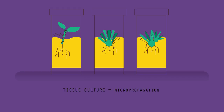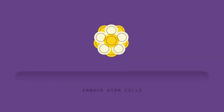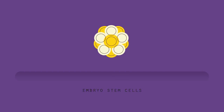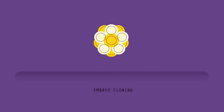Animals can also be cloned, but different techniques need to be used. In animals, only embryo stem cells have the capability to differentiate into all the different types of cells found in an adult. There are two methods you can use.